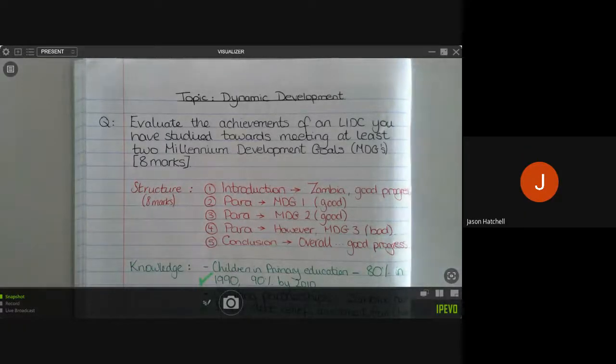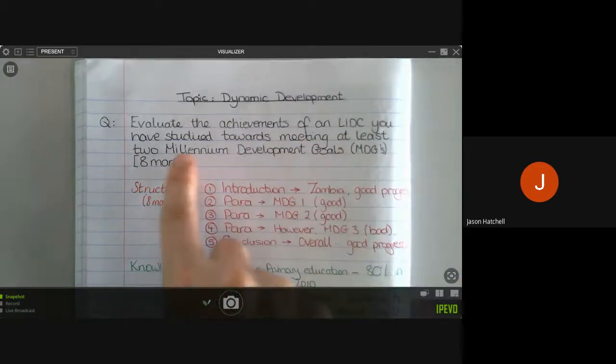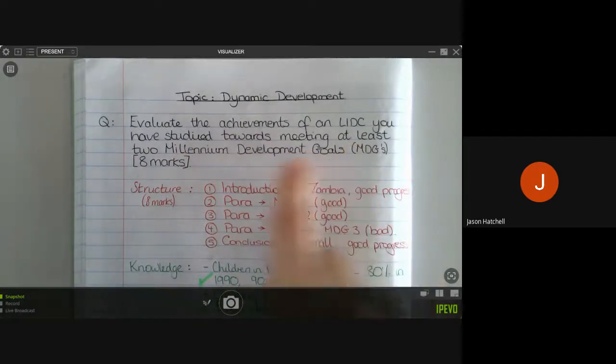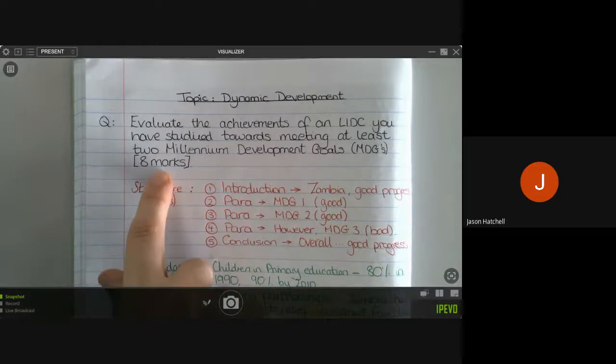Welcome to this first exam question practice session. In these sessions, what I will do for each of the topics is a number of different exam questions you could be asked in your GCSE, and we will practice answering it together. So this is the first question I have picked out for dynamic development, and it says evaluate the achievements of an LIDC you have studied towards meeting at least two Millennium Development Goals, and that is worth eight marks in total.